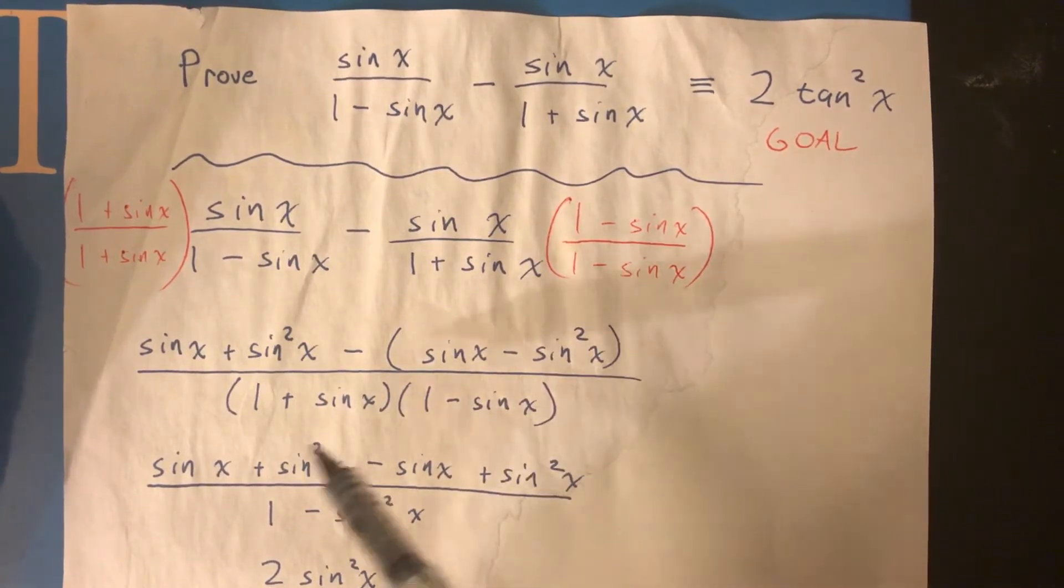Hey, we were just talking about that. If you FOIL it together, you get 1 minus sine squared x. It's a difference of squares. Why 1? Because it's really 1 squared.